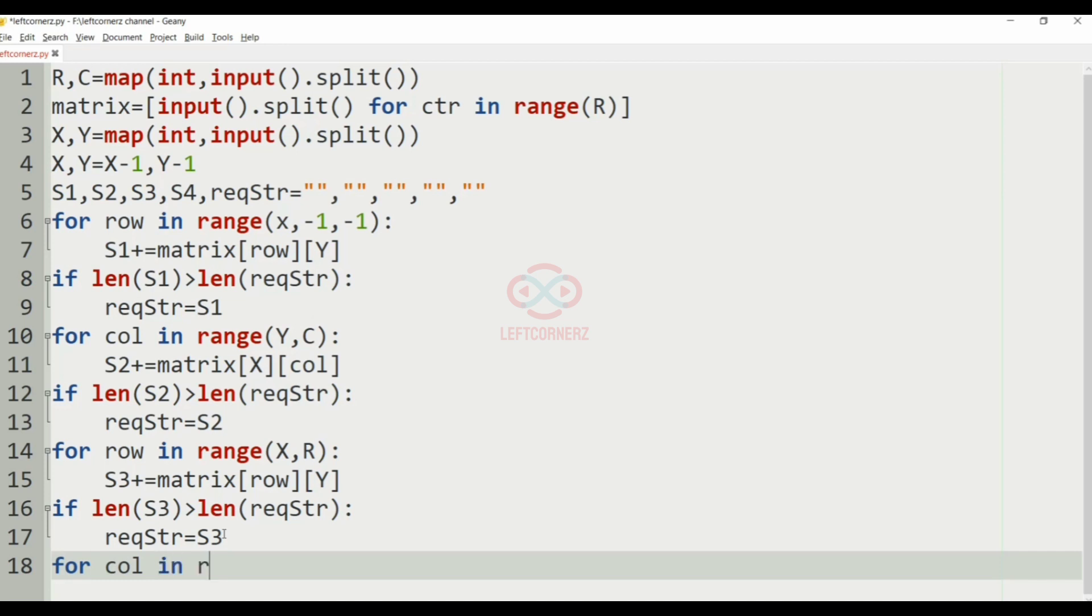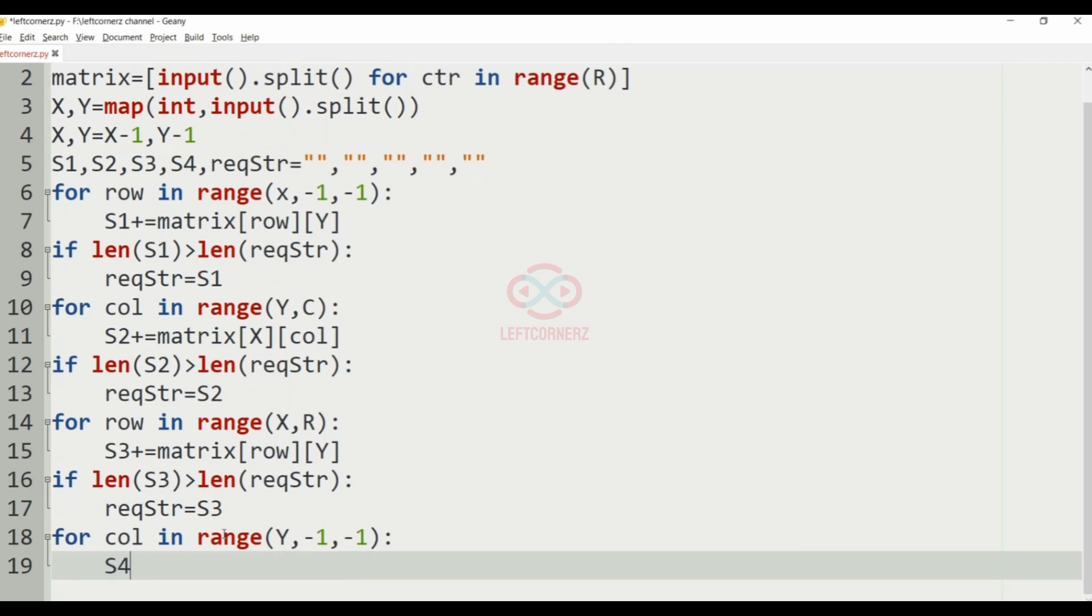And after that, for column in range Y minus 1 comma minus 1, we'll have the S4 incremented with the matrix of X and column.